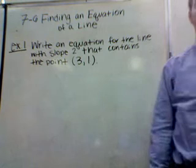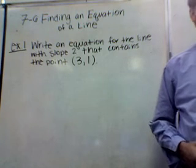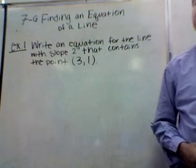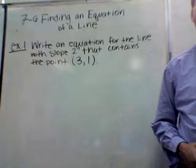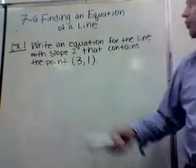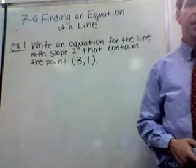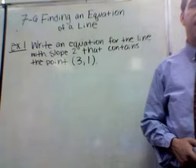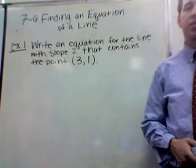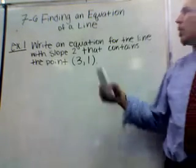Good afternoon everybody. Welcome back on Monday. We're doing math — it's section 7.6, page 328. The first example we're going to do is writing an equation for the line with slope 2 that contains the point (3, -1).